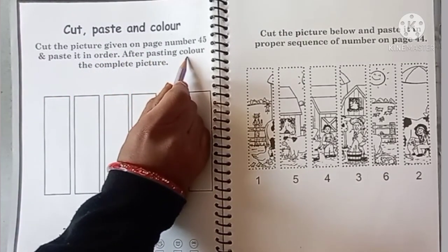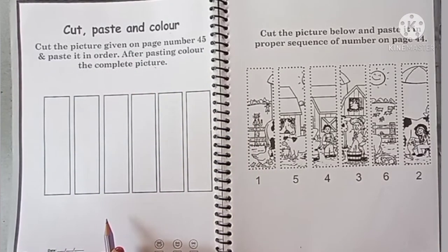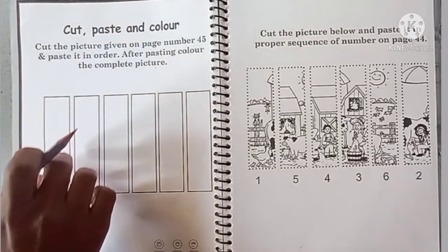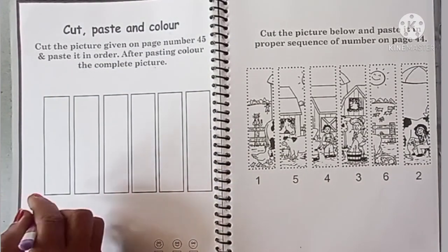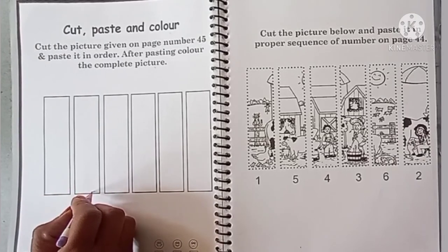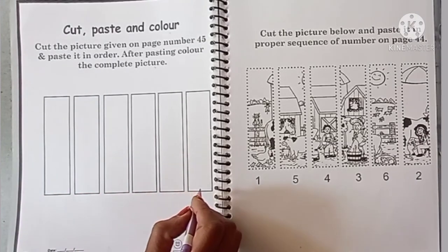After pasting, color the complete picture. You can see page number 45. Here you can see how many boxes are there. Counting, say 1, 2, 3, 4, 5 and 6.